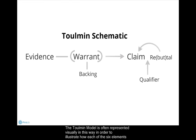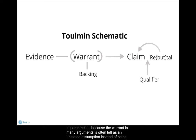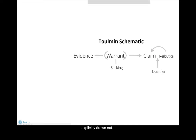The Tullman model is often represented visually in this way in order to illustrate how each of the six elements relates to and depends on each other. As you can see, the warrant sits between the evidence and the claim, but is put in parentheses because the warrant in many arguments is often left as an unstated assumption instead of being explicitly drawn out.